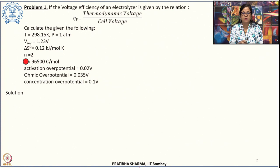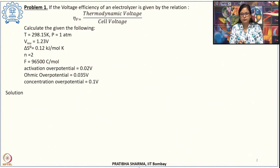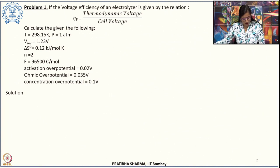The number of electrons participating in the reaction is 2, Faraday's constant is 96500 coulomb per mole, activation overvoltage is 0.02 volt, ohmic overvoltage is 0.035 volt, and concentration overvoltage is 0.1 volt. Given these conditions, we have to find out the voltage efficiency value.